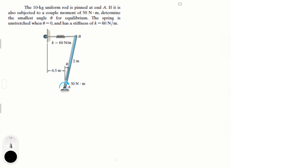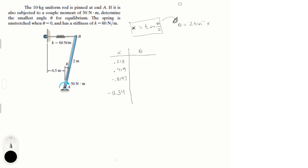Since x equals tan(θ/2), theta equals 2 arctan(x). Making a table: for x = 0.218, theta = 24.6°; for x = 0.419, theta = 45.47°; for x = −0.8197, theta = −78.68°; for x = −13.34, theta = −171.43°.